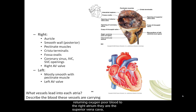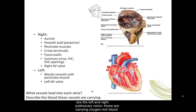Let's review. There are three major vessels returning oxygen-poor blood to the right atrium: the superior vena cava, inferior vena cava, and the coronary sinus. Blood vessels leading to the left atrium are the left and right pulmonary veins, which carry oxygen-rich blood back to the left atrium.